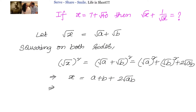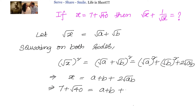But what is our x? It is 7 plus root 40. So, can we write down 7 plus root 40 equals a plus b plus 2 root ab?